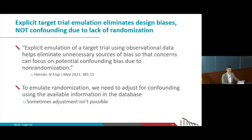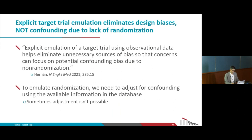The confounding bias that happens because the study is observational and not randomized has to be solved by adjusting for confounders. No method of causal inference from observational data is going to change that. We need to have information on confounders. That is really the goal of explicit target trial emulation: eliminate all those biases that are not inherent in the data like confounding is, but biases we create if we don't do things right.